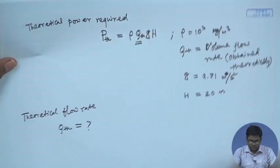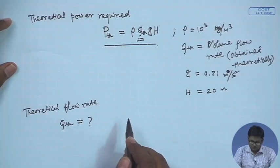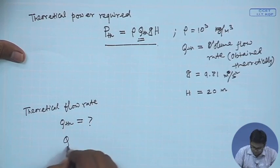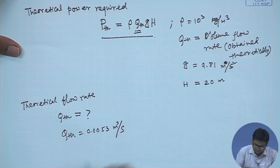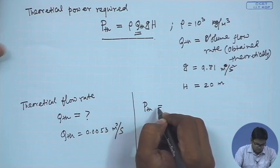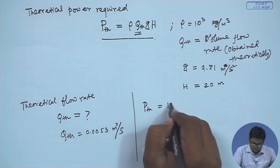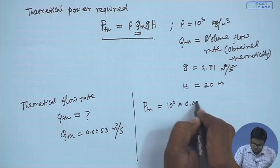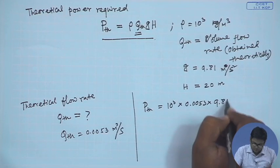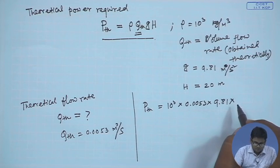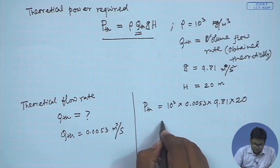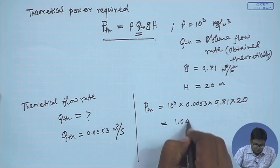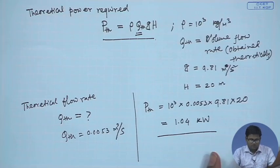Now let us find the power required. Theoretical power P_th = ρ × Q_theoretical × g × h. Substituting ρ = 1000, Q = 0.0053, g = 9.81, and h = 20 meter, we obtain P_theoretical = 1.04 kilowatt.